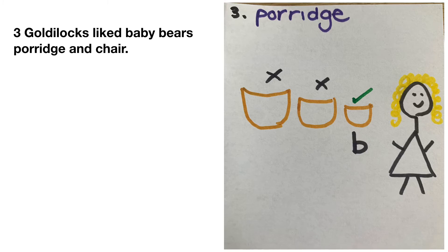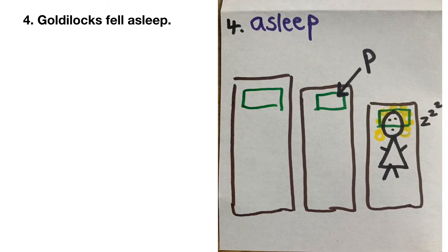Now Goldilocks unfortunately broke baby bear's chair. What did she do after this? Goldilocks fell asleep, but she didn't fall asleep in daddy bear's bed because it was too hard, and she didn't fall asleep in mummy bear's bed because it was too soft. But baby bear's bed was just right. I have drawn the three beds and Goldilocks asleep in baby bear's bed. I have written number four, 'asleep', and labelled the pillow with the initial sound P.